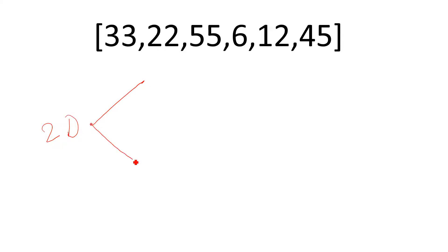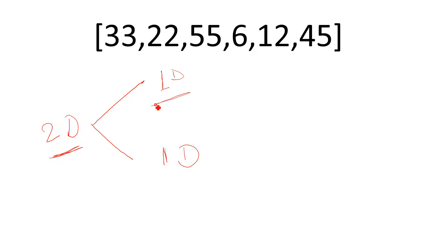We want to change it to a two-dimensional array. A two-dimensional array is constituted of two one-dimensional arrays. There is one condition: if you are creating a two-dimensional array, you need at least two one-dimensional arrays combined together, and each of those one-dimensional arrays must have the same number of elements inside.